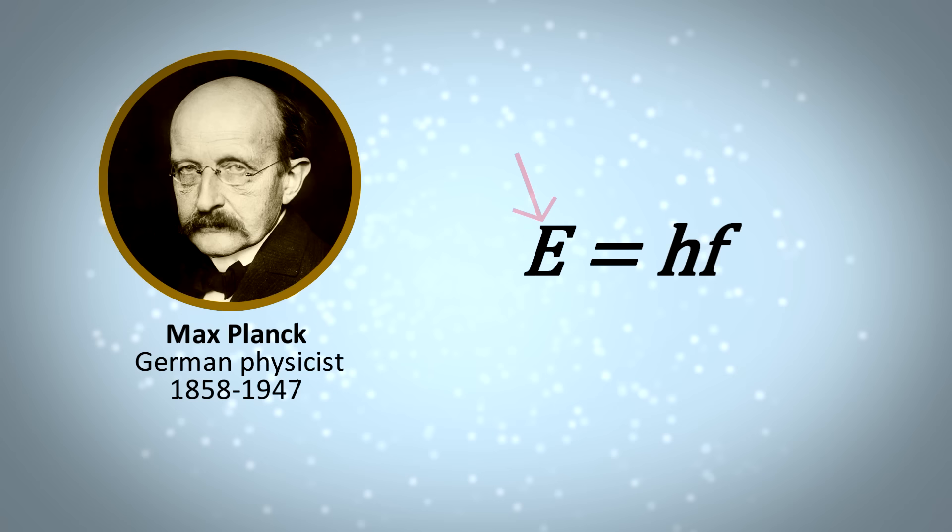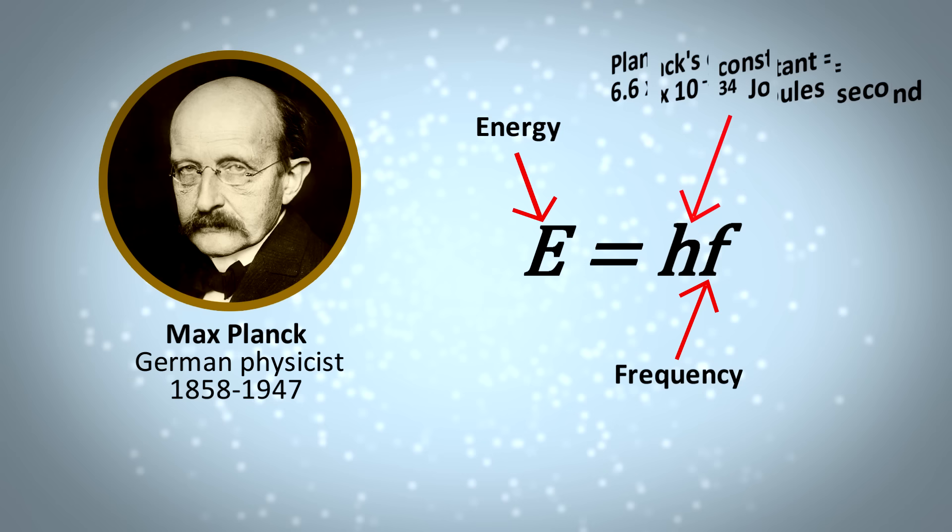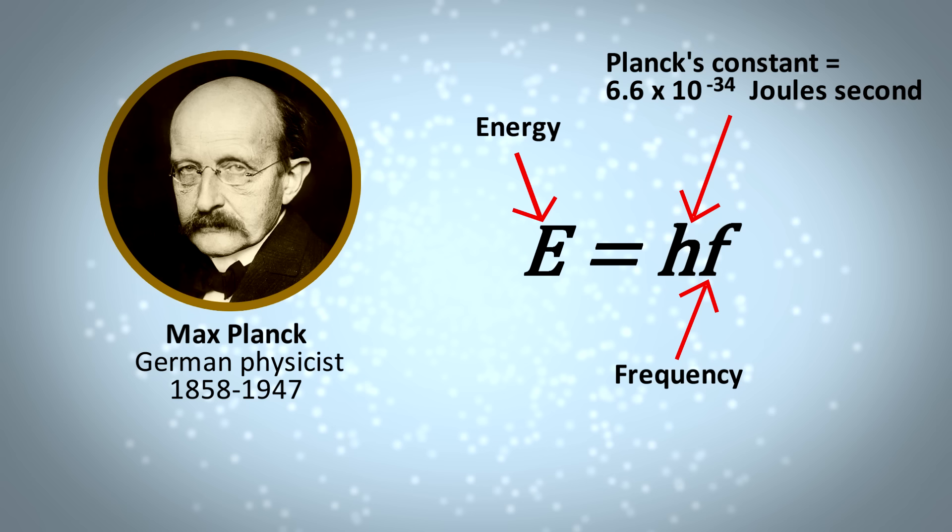This is analogous to how our universe appears classical and continuous, but is fundamentally quantum. It is made of discrete chunks of energy, as Max Planck famously showed in 1900. Thanks to him we have this famous equation, where E is the energy of a photon, f is the frequency of the light wave, and h is the proportionality constant that relates these two properties.